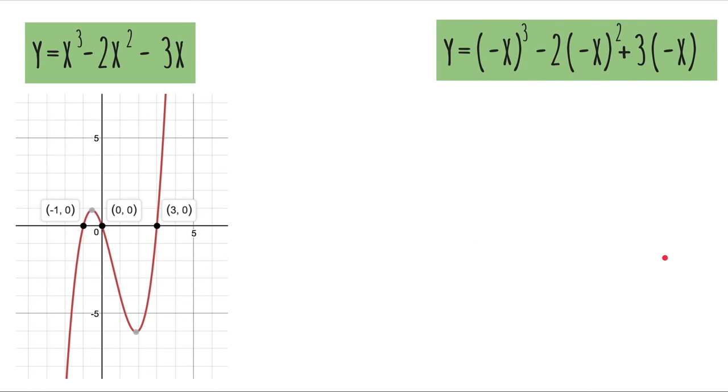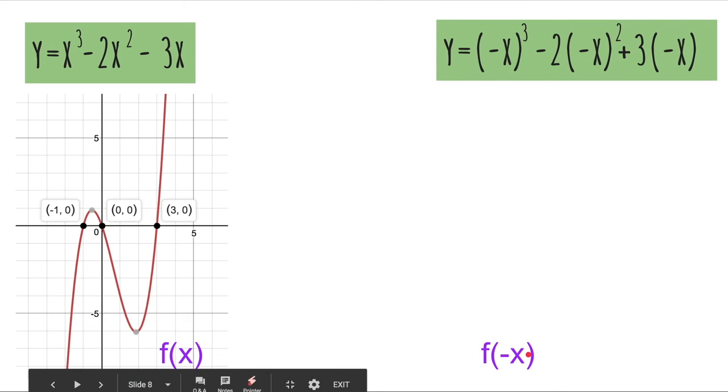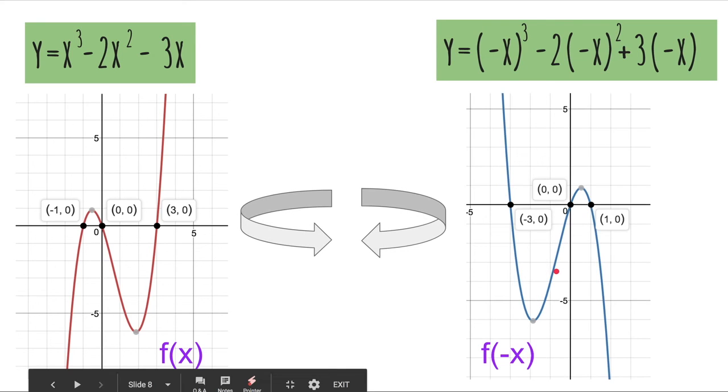If we made all the x values negative, so f(x), we transform the graph into f(-x), then the graph will flip on the y-axis. So, the x values flip. The x solutions flip. Now, I'm not going to go too much into transformations because that's for another video.